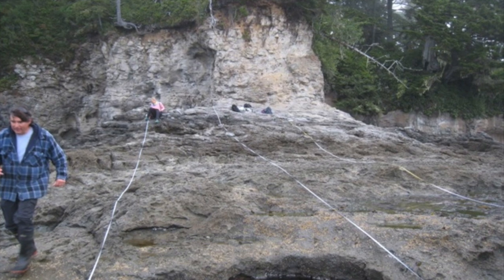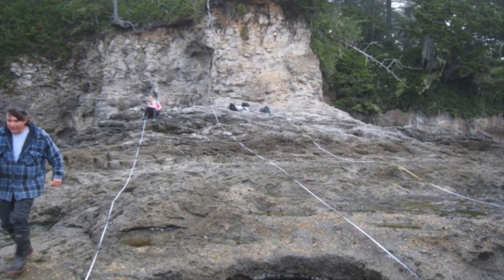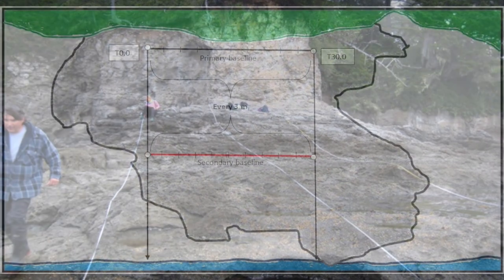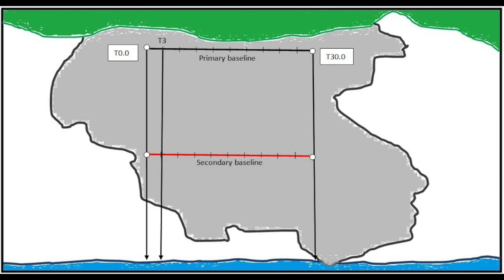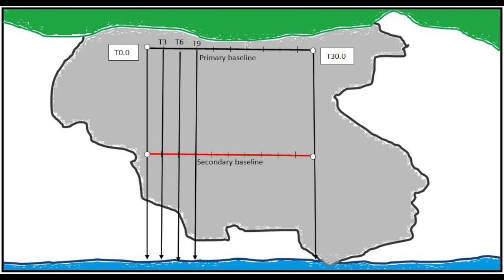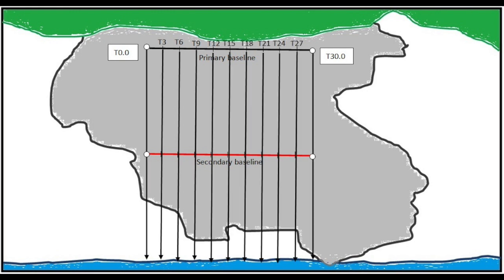The last step before starting to gather data is to set up your internal transect lines. These will run perpendicular to the shore, anchored every three meters along your primary baseline. The secondary baseline is used to ensure that your transect lines run parallel to each other. For a 30-meter baseline transect, you will have 11 transects in total.